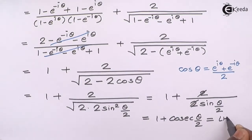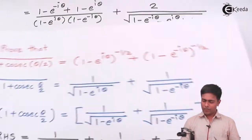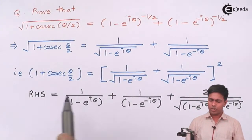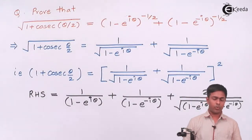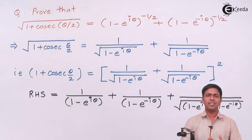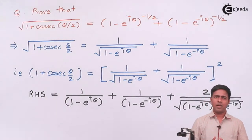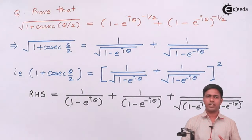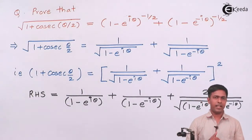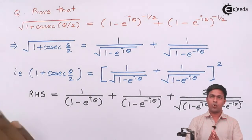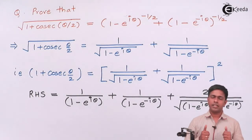Since 1/sin is cosec, we get 1 + cosec(θ/2), which is exactly the required left-hand side! Taking the square root on both sides gives the original result. We've proved the required result using smart steps. If you want to learn mathematics this way, visit ekeda.com where you can find me and my videos. Thank you very much.